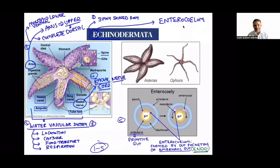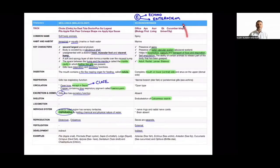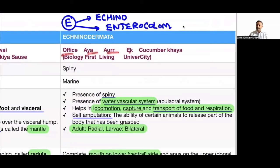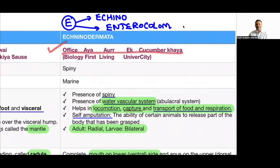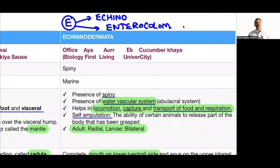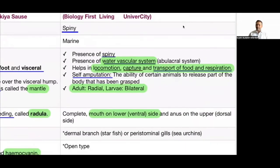Next phylum: Echinodermata. Tricks: 'Office aaya aur cucumber khaya' and 'Biology is my first living university.' The body is spiny — 'echino' means spine, 'derma' means skin, hence spiny-skinned body. These are marine organisms. Important mnemonic: E for Echinodermata and E for enterocoelom. Echinodermata onward, all phyla (Echinodermata, Hemichordata, Chordata) show enterocoelom.